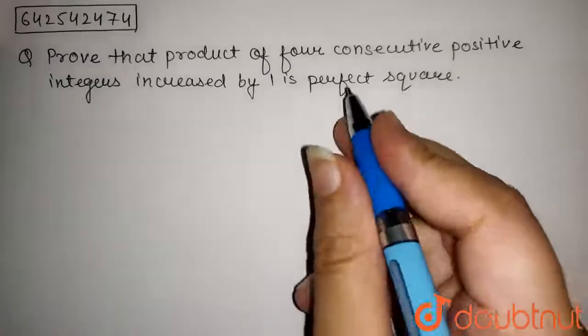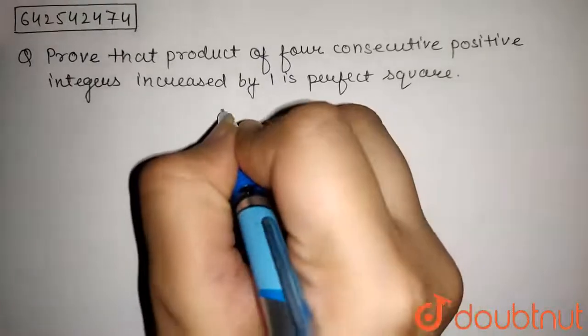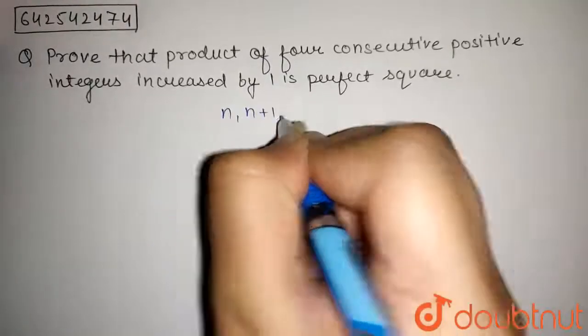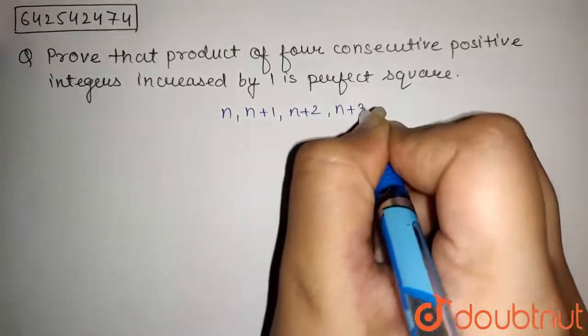So, let the four consecutive positive integers be n, n plus 1, n plus 2, and n plus 3.